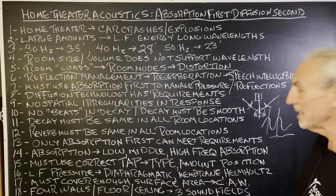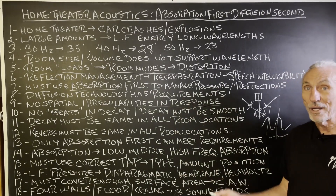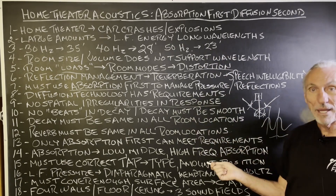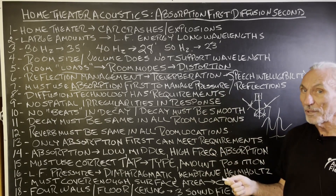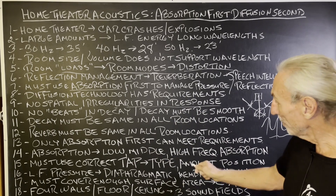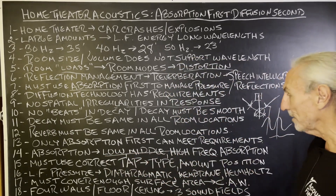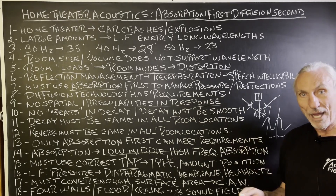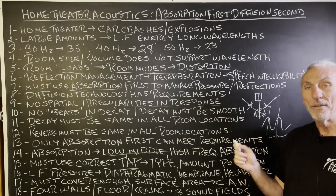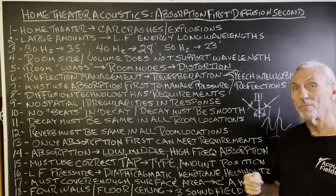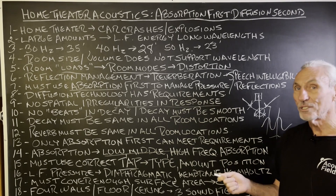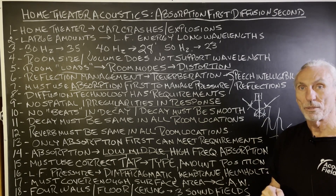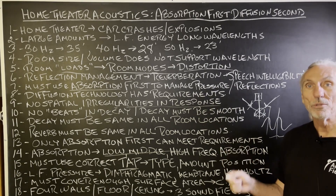Only absorption can meet these requirements — we only have two tools: absorption and diffusion. You have to get absorption first and get all these criteria met before you can apply diffusion. Break the absorption down into lows, mids, and highs. Remember the acronym TAP — type, amount, and position. You've got to use the right type of treatment for low frequency and the right type for middle and high frequency. They're both different treatments, and there's not one that'll do both. You can't use foam for low frequency absorption — you've got to use the proper tool for the job.